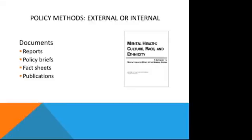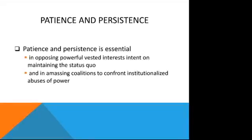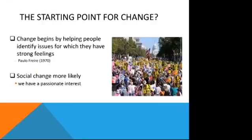In interviewing Lonnie Snowden and the other community psychologists involved in the policy arena, I have been repeatedly struck by the personal qualities they bring to their policy work. Please share a bit more about this personal dimension. In this policy work, both patience and persistence are essential in opposing powerful vested interests intent on maintaining the status quo, or in amassing coalitions to confront institutional abuses of power. I've been committed to working with recovery homes and chronic illness because I was passionate about these areas of work. Social change can begin by helping people identify issues for which we have strong feelings — it's more likely to occur when we have a personal and passionate interest in the issue. Having a fire in your belly where you live and breathe about something you really care about — that's the starting point.